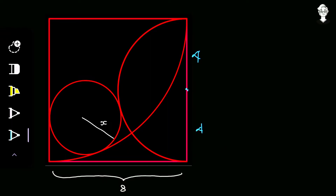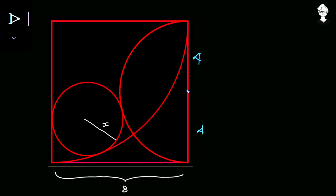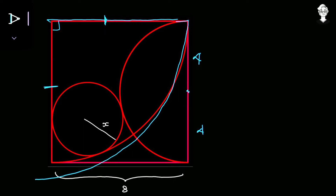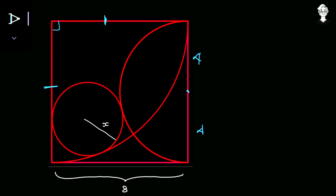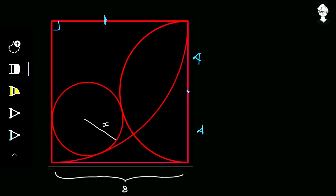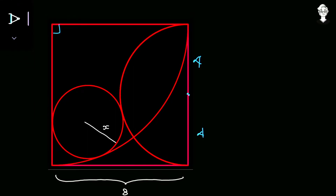Now, what is the radius of the quarter circle? The quarter circle is drawn from a corner of the square, where the angle is 90 degrees. From that corner, the quarter circle extends along two sides of the square, so both those sides form the radius of the quarter circle. Since the side length of the square is 8, the radius of the quarter circle equals 8.